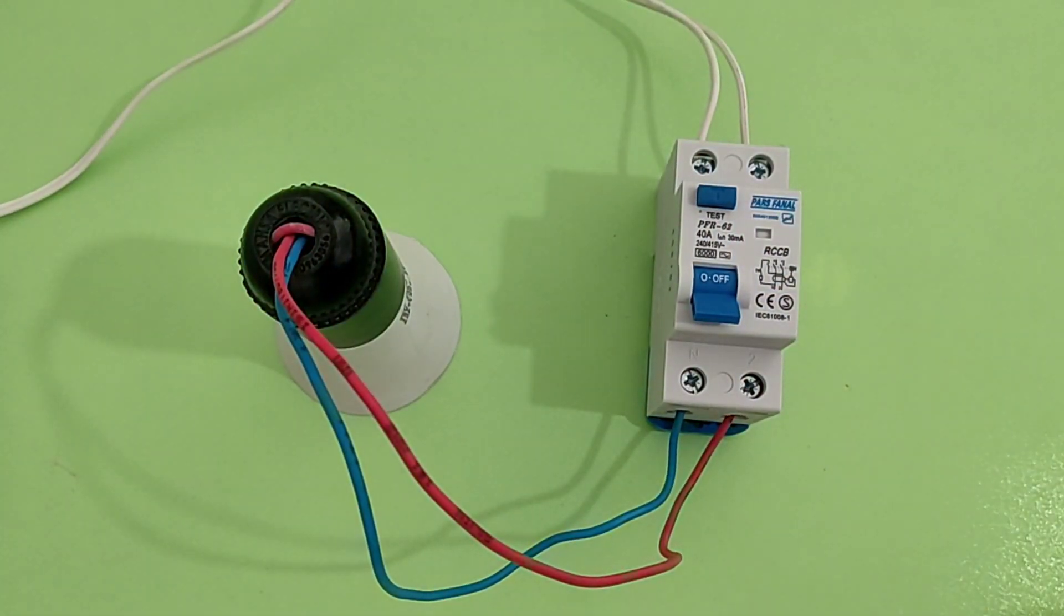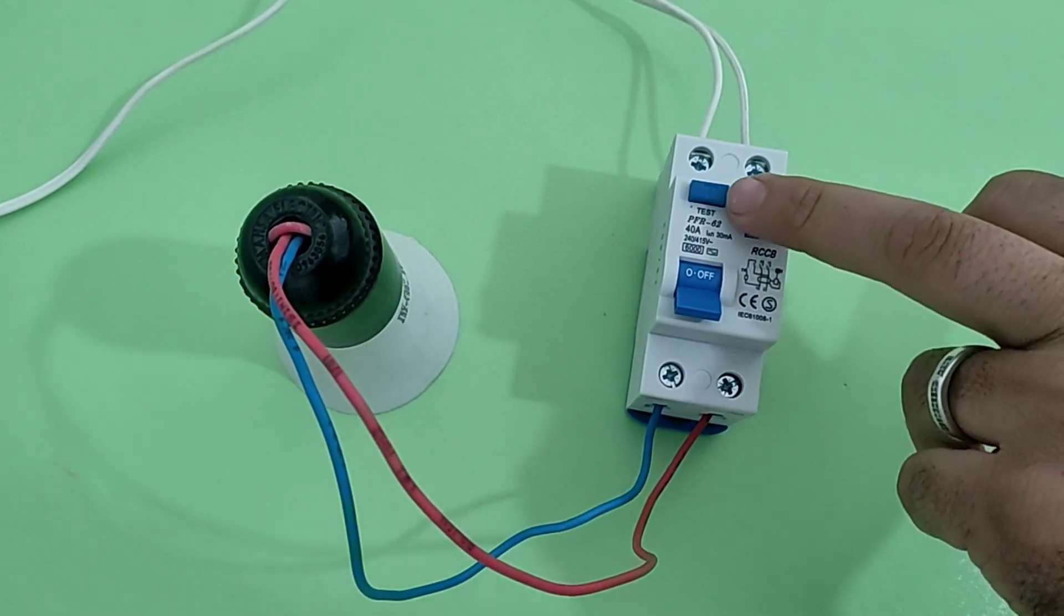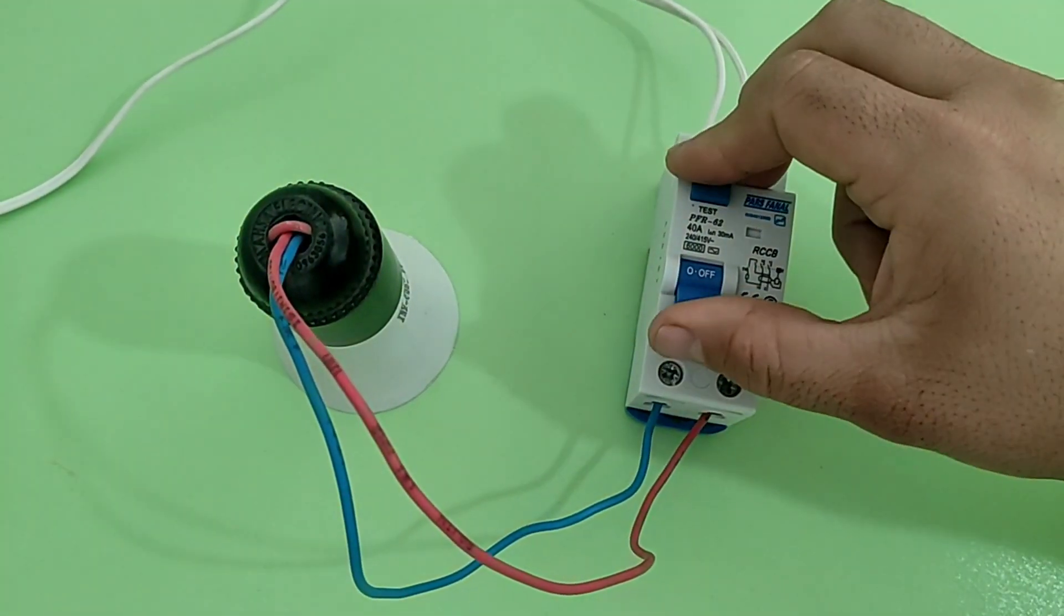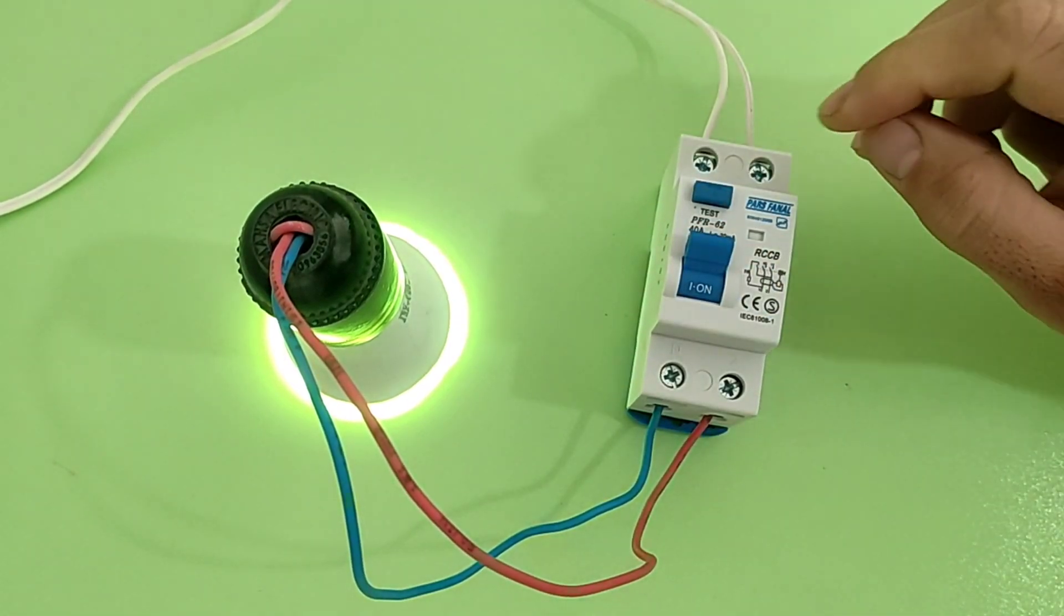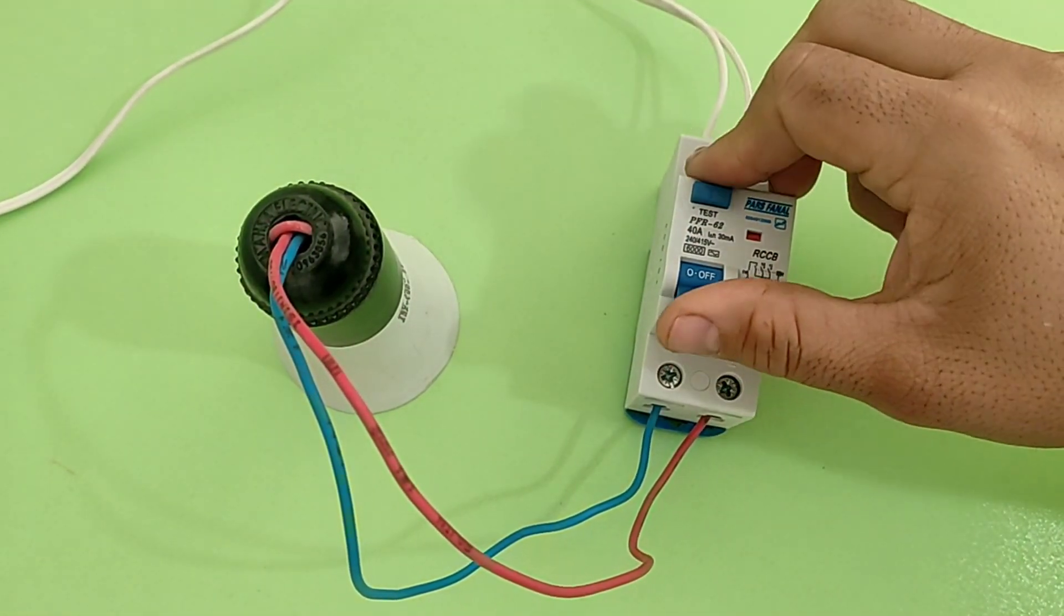For the times when the RCCB switch is connected to the electricity, we can check the health of the RCCB switch by using the test key on the switch. If the switch is healthy, when we press the test key, the switch will be disconnected.